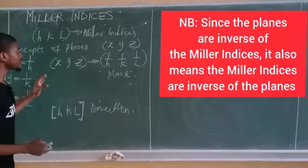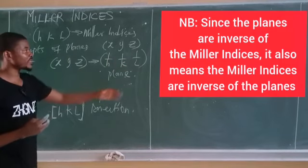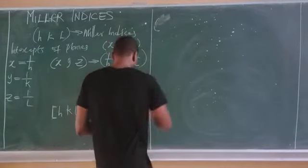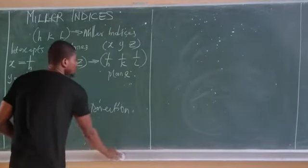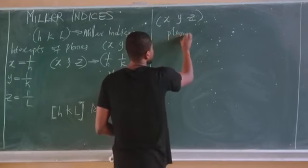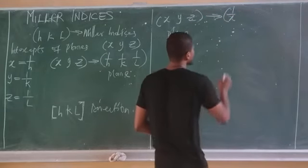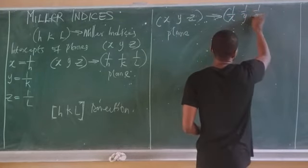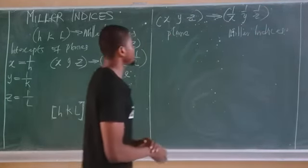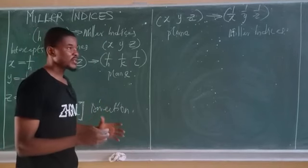If the inverse of the Miller index gives the plane, then conversely the inverse of the plane gives back the Miller indices. So if you are given a plane (x, y, z), taking 1/x, 1/y, and 1/z will give you the Miller indices. The inverse of the planes gives the Miller indices, and the inverse of the Miller indices gives the planes.